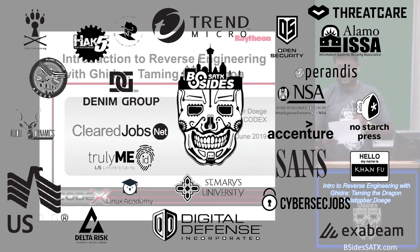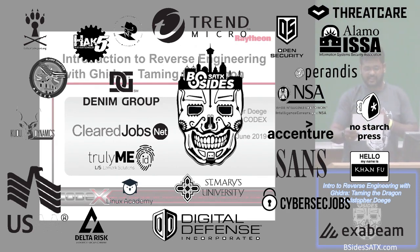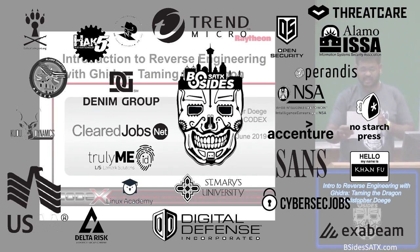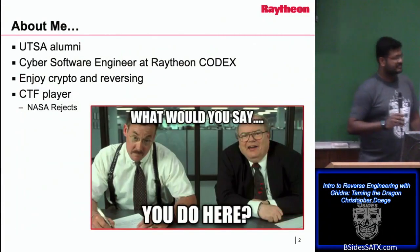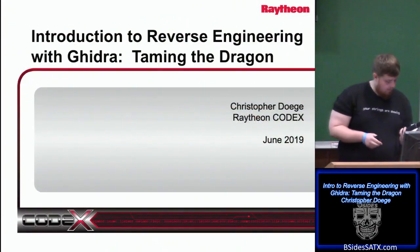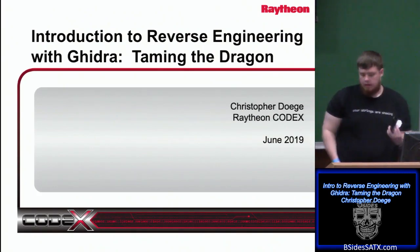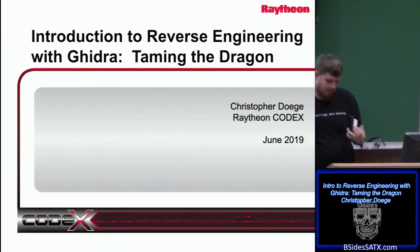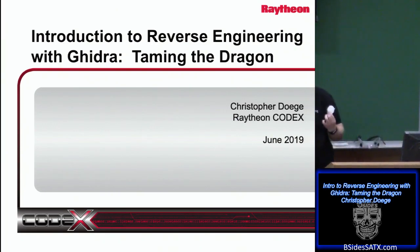Moving forward, I'd like to introduce the sponsors for the BSides event. Gold level sponsors are St. Mary's University, UTSA, Trend Micro, Digital Defense, and Sense. Silver level sponsors are the National Security Agency, Exabeam, Essential Federal Services, and Open Security. Titanium level: CyberSec Jobs, Denim Group, LMO, ISA, and Landmark Solutions. Thank you all for being here.